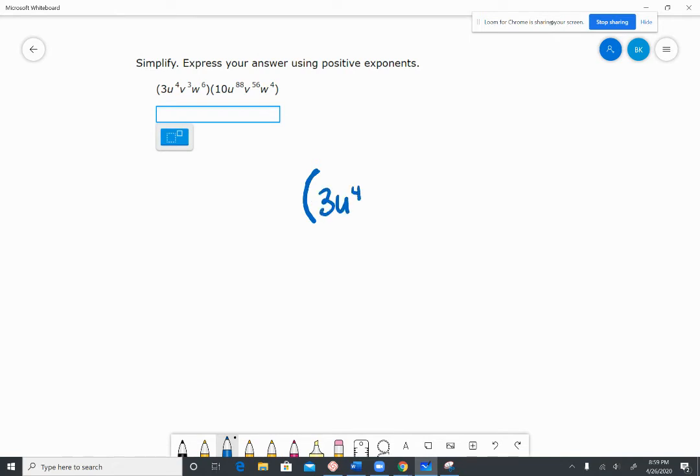So 3u to the 4th, v to the 3rd, w to the 6th times 10u to the 88th power. That's a lot of u's. So we're going to use v to the 56th and w to the 4th. So you just want to take everything just one at a time. So you are first going to work with your numbers. 3 times 10 is 30.